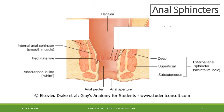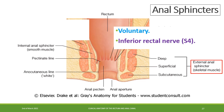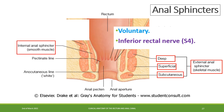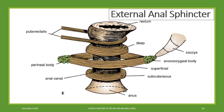The anal sphincters are of two types. The external anal sphincter is skeletal muscle, voluntary, and innervated by the inferior rectal nerve. It consists of three parts: deep, superficial, and subcutaneous. The internal anal sphincter is composed of smooth muscle; it is involuntary and receives autonomic innervation. Here is a better look at the three parts of the external anal sphincter: the deep, the superficial, and the subcutaneous.